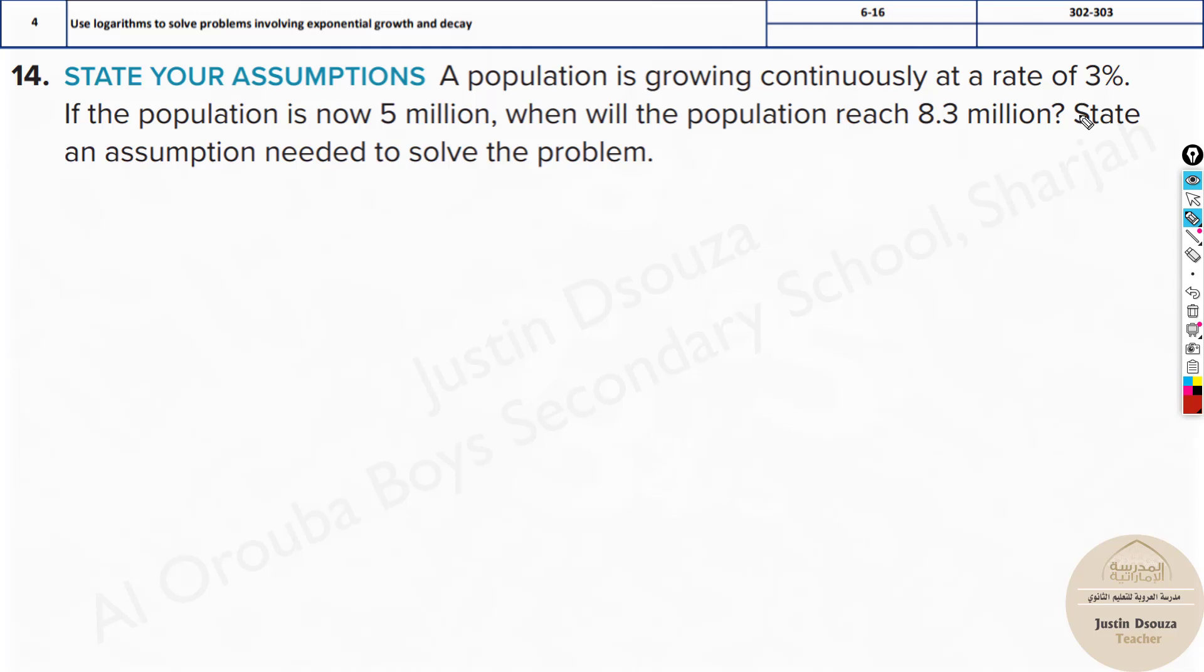What is the assumption? Let's do this part first. They have given you populations and the rate. The only assumption when we use exponential growth is this rate will remain the same throughout. So, the formula is y equals a times e to the power kt. This is the rate k. We assume that k will be constant throughout, from 5 to 8.3 million. But that may not happen in real life, but we are assuming that will be the constant rate. That is the assumption for this question.